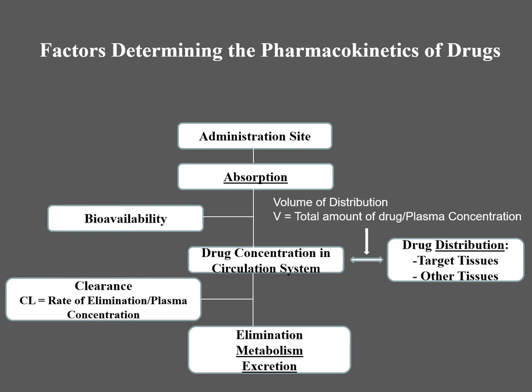Now we need to find out what is the drug concentration in the circulation system. That can be assessed by two factors: drug distribution and bioavailability. Bioavailability is nothing but availability of a drug in systemic circulation. When you say drug distribution, that means after entering into systemic circulation, the drug may distribute to your target tissue or other tissues. Volume of distribution can be calculated by dividing total amount of drug by plasma concentration.